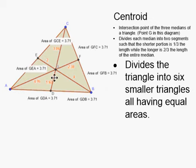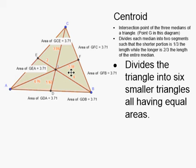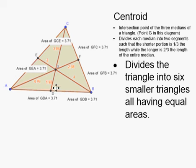Another important property of the centroid is that constructing the three medians divides the original triangle into six smaller triangles. These triangles aren't necessarily congruent to each other, however they do all have the same area. Here I've measured the area of all six smaller triangles inside the larger triangle, and all six have an area of 3.71 square units. So the medians divide the triangle into six triangles of equal area.